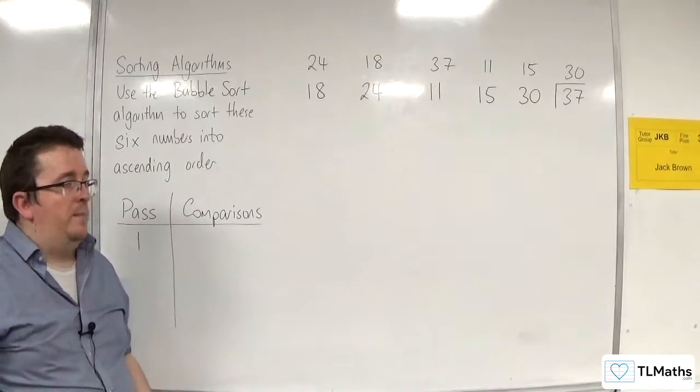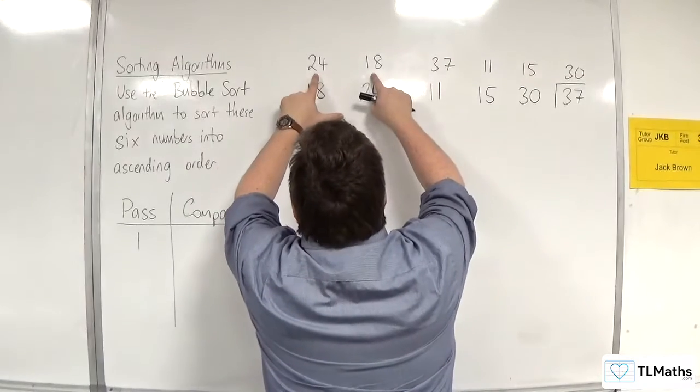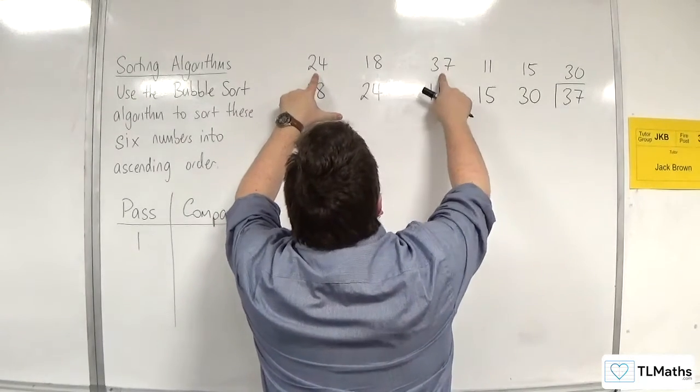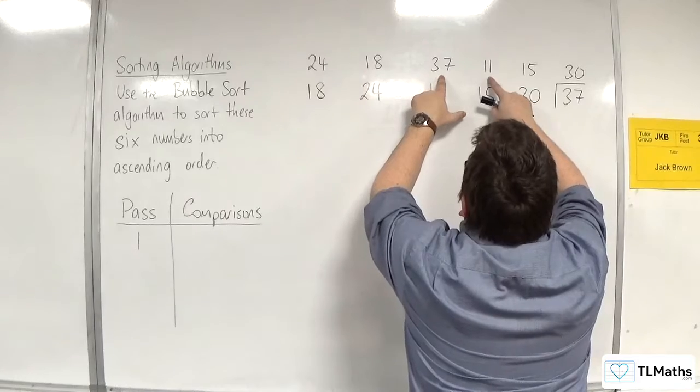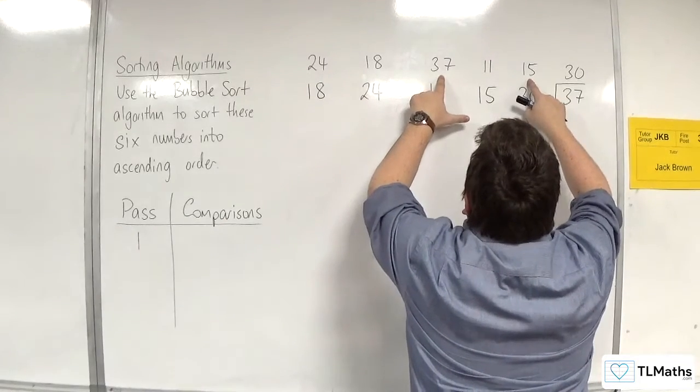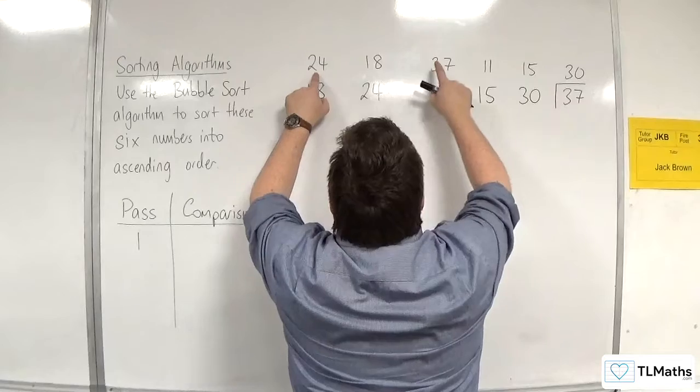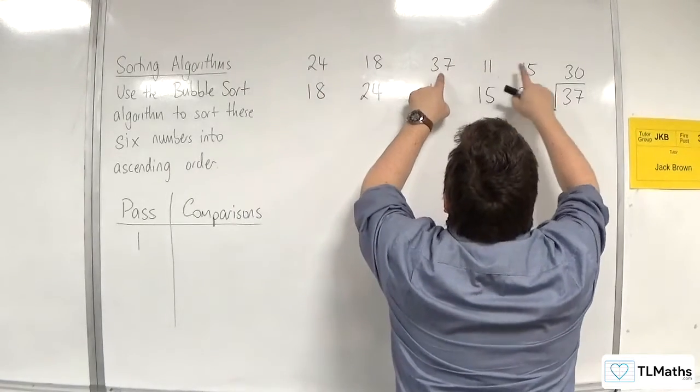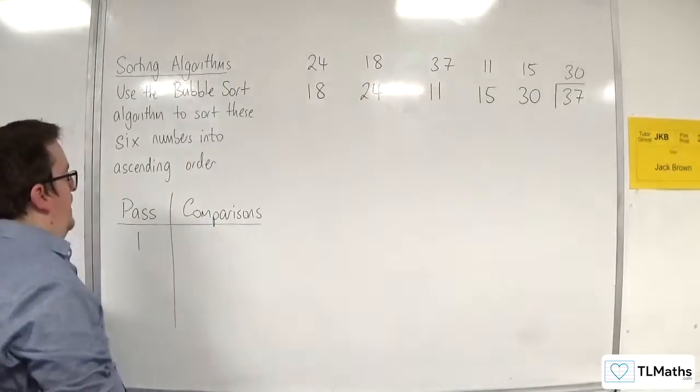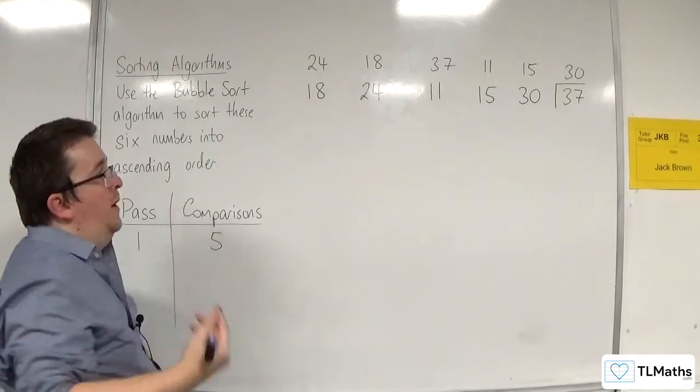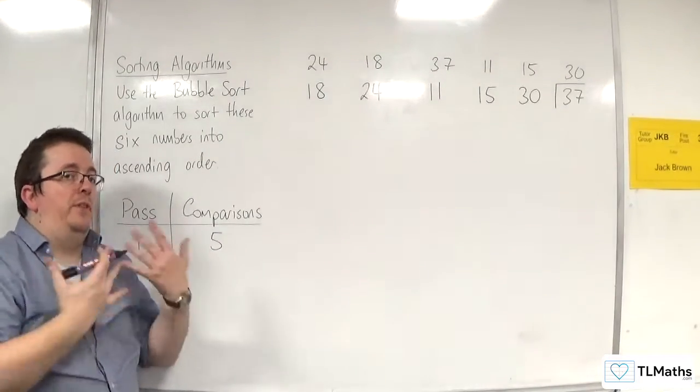So in that first pass, how many comparisons did I make? Well, I compared 24 with 18, I compared 24 with 37, I compared 37 with 11, 37 with 15, and 37 with 30. So we had one, two, three, four, five. Five comparisons were made. Because that's one less than the number of numbers that I had. So I had six numbers, there were five comparisons.